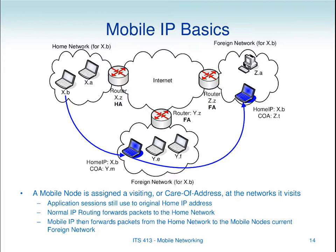We introduced some terminology and components yesterday. Today we need to look at the details of how that works. The two main details are: when you move into a foreign network, how do you tell the home agent that you're there? And the other detail is how do we send the data — in particular, when the data is sent to the home agent, how does it forward it onto the foreign agent? We'll look at that as well, plus a few other minor features.